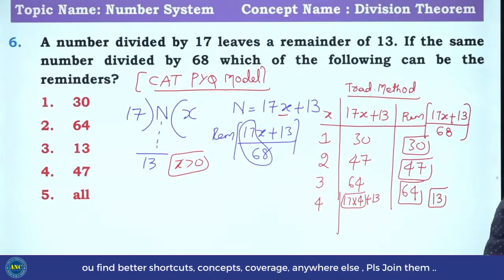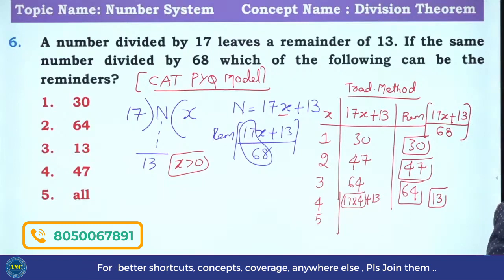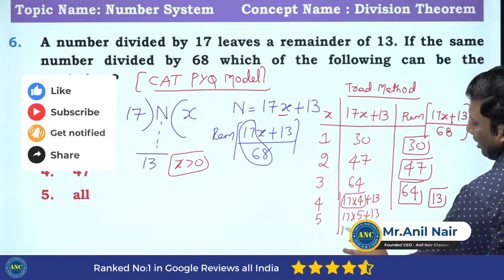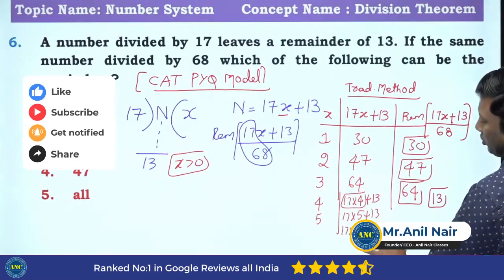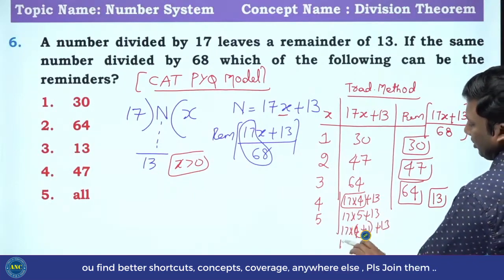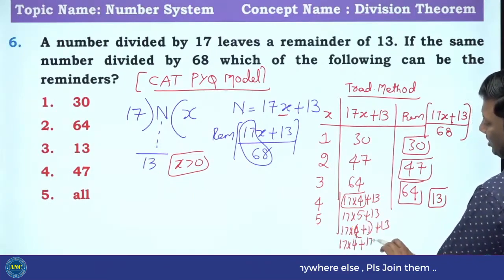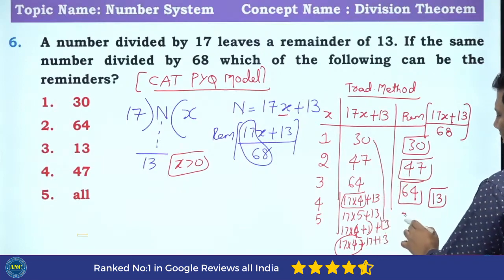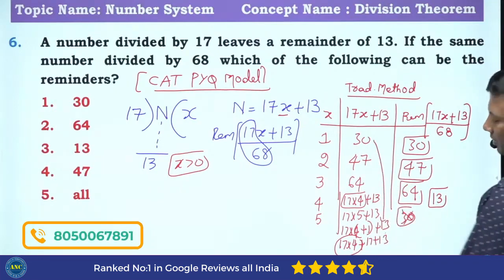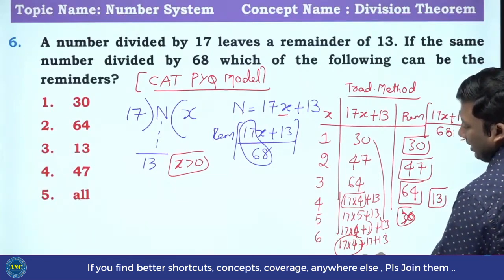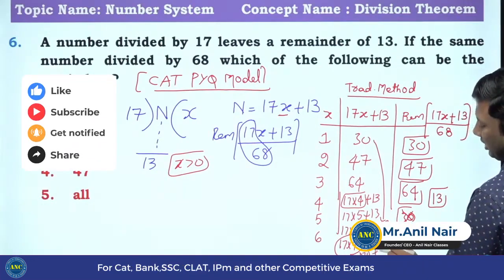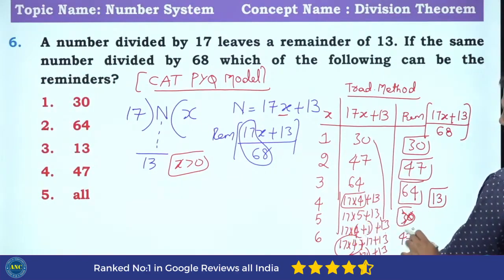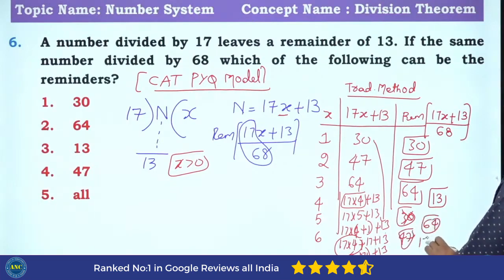Listen carefully. If X is 5: 17×5 plus 13 can be written as 17×4 plus 1 plus 13, which equals 17×4 plus 17 plus 13. Since 17×4 equals 68 and is perfectly divisible by 68, the remainder is just 17 plus 13 equals 30 — same as X=1. For X=6: 6 can be written as 4 plus 2, so the remainder becomes 47 — same as X=2.